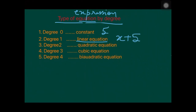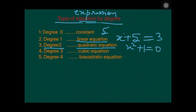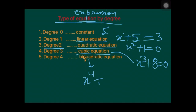If the highest power of x is 1, it is a linear equation. If the degree is 2, it is known as a quadratic equation. If the degree is 3, it is a cubic equation — for example, x cubed plus 4 equals 0. If the degree is 4, it is called a bi-quadratic equation — for example, x to the power 4 plus x cubed plus x equals 0.